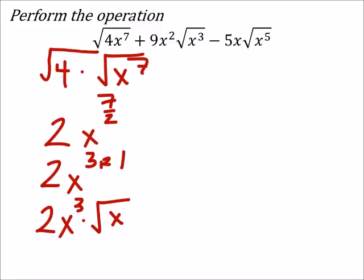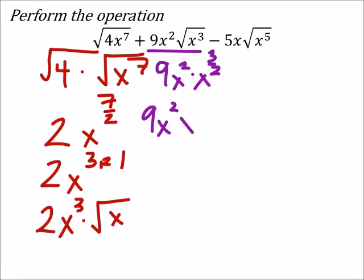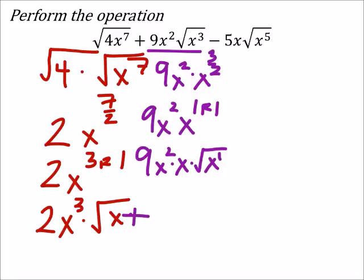Now let's look at nine x squared times the square root of x cubed. That's nine x squared times x to the power of three-halves, which is the same as nine x squared times x to the power of one with a remainder of one. So that's nine x squared times x times the square root of x, which ends up being plus nine x cubed square root of x.